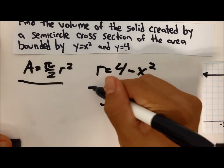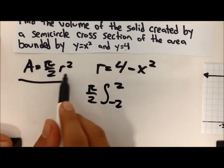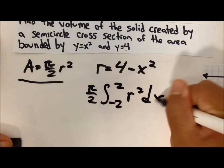And we put pi over 2 in the front because of the formula of pi over 2 r squared. And we leave it like this.